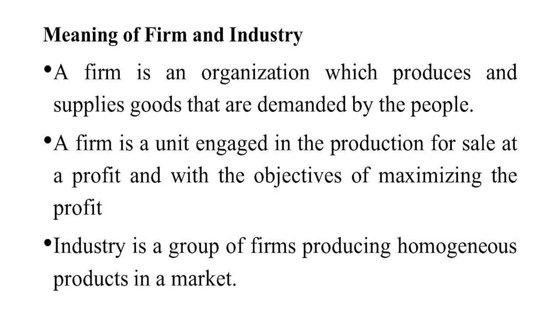Then we have the industry. Industry is basically a group of firms. As I told you, a firm is an organization. As far as the industry is concerned, it is a group of firms producing homogeneous products in a market. This one condition must be fulfilled — that they are producing homogeneous products in a market. That group of firms is known as an industry.